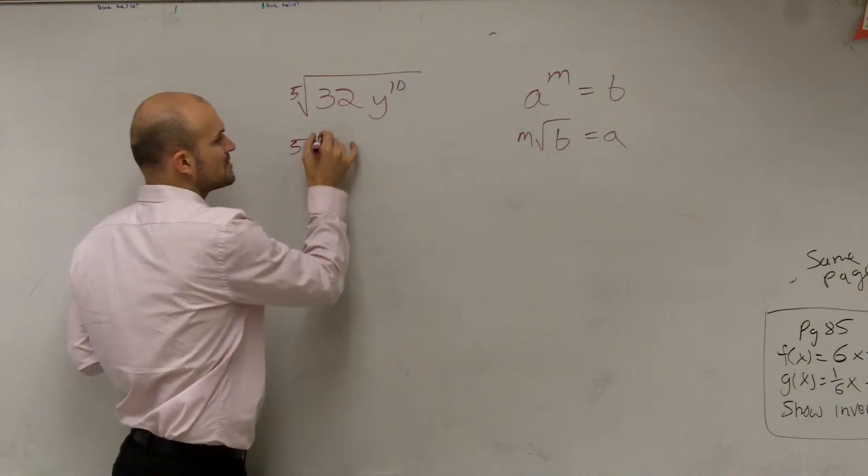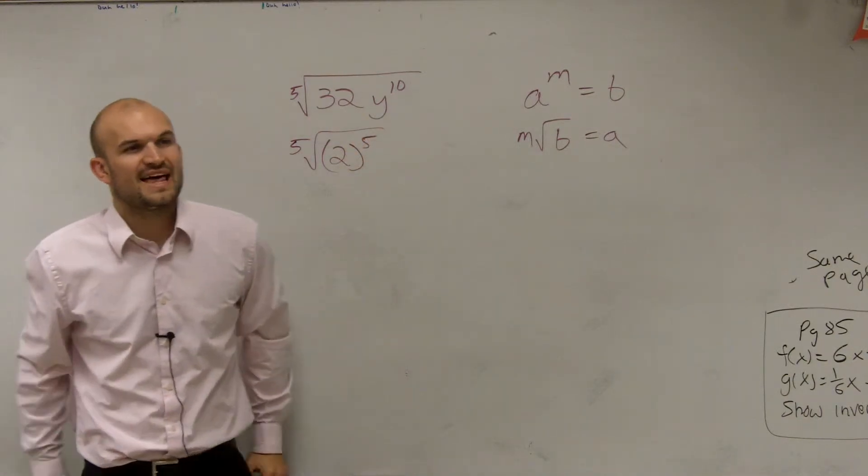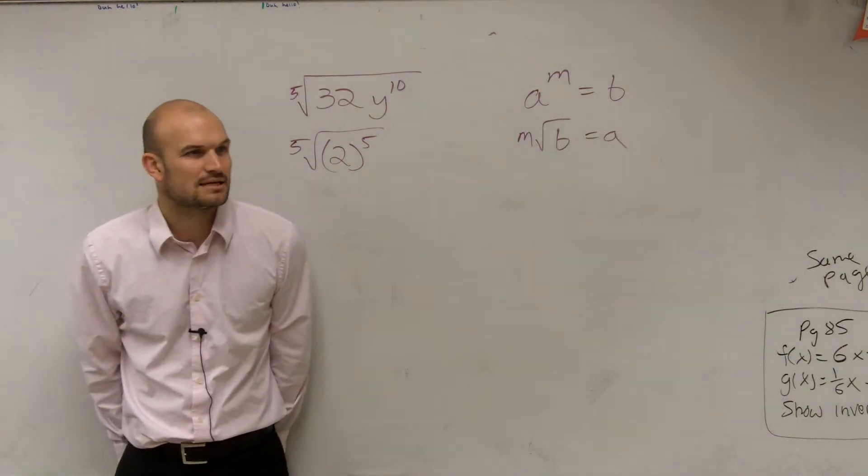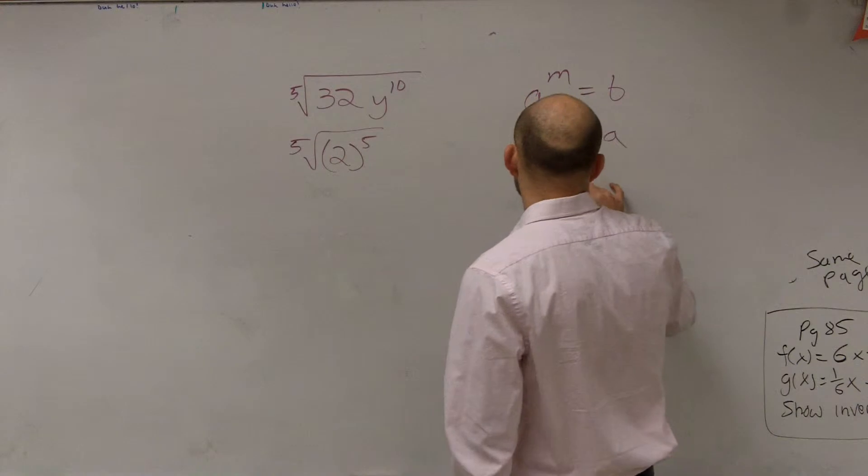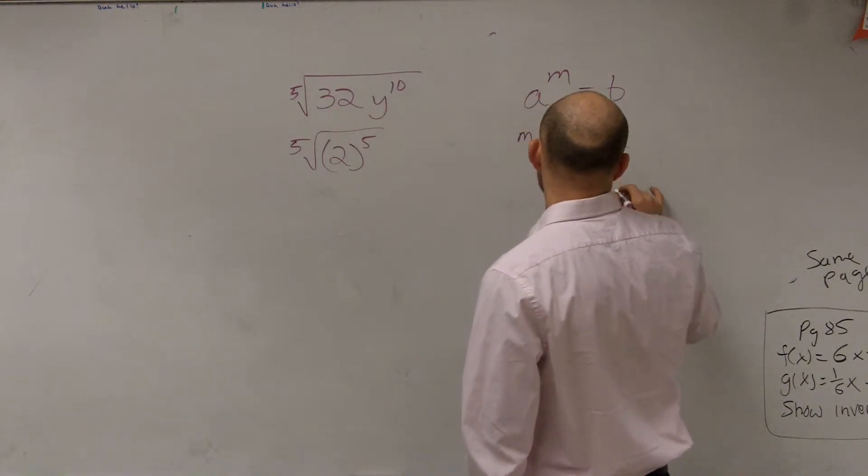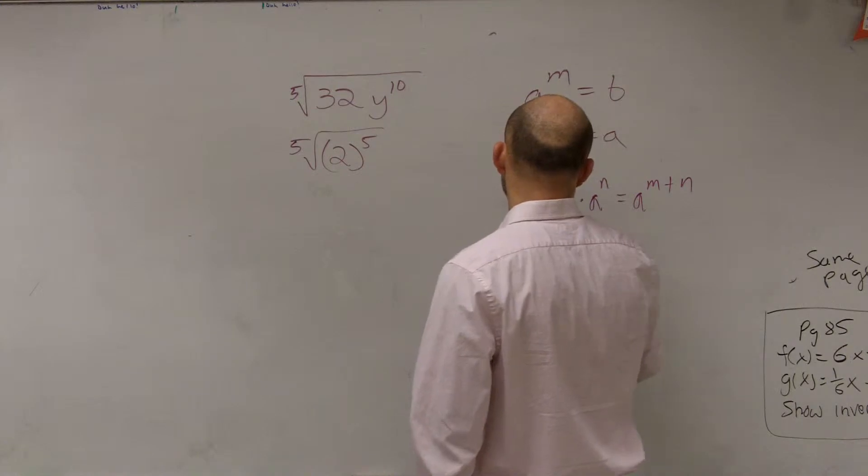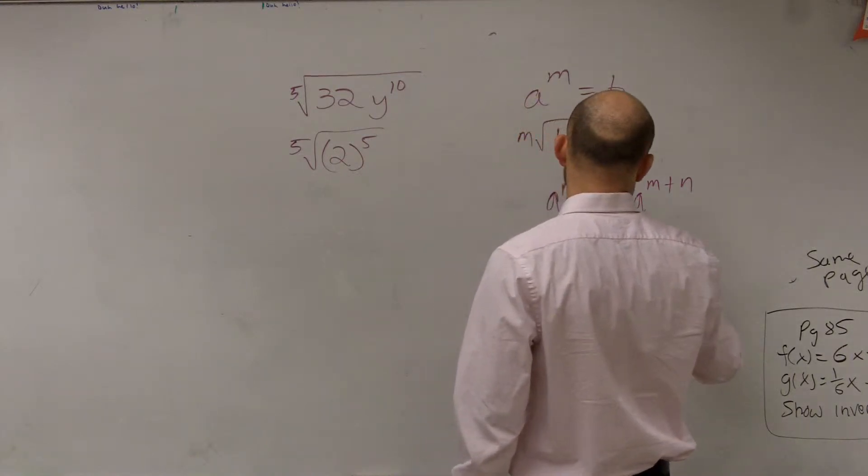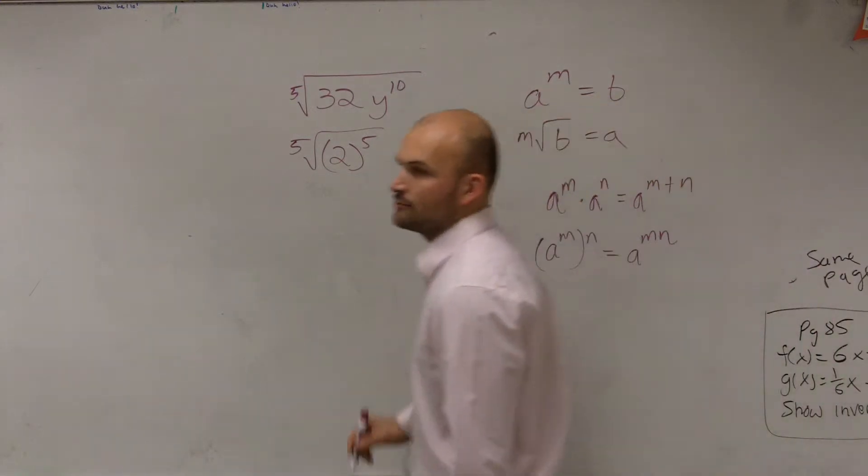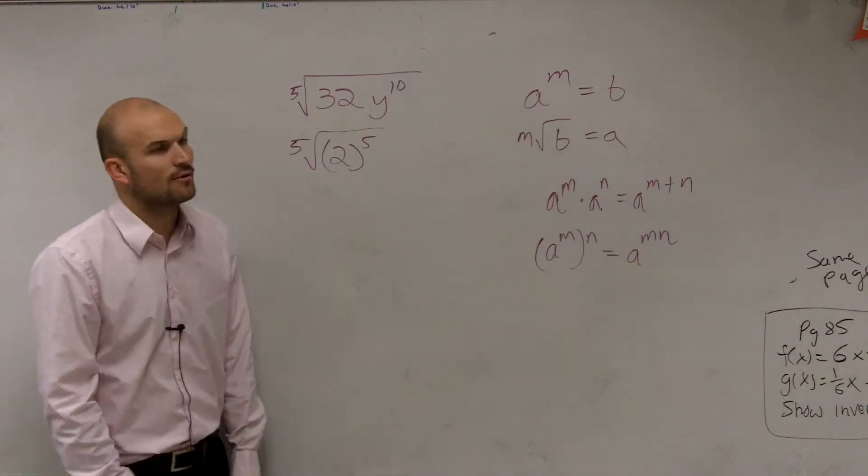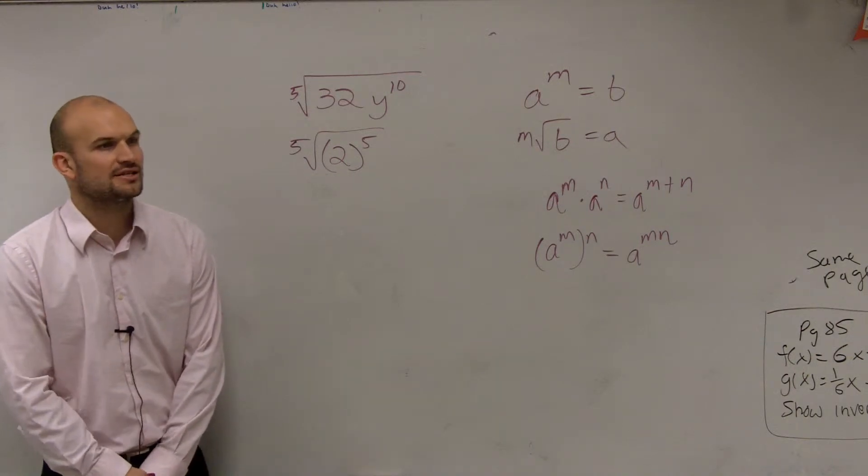So we could say the fifth root of 2 raised to the fifth power, and then about y to the 10th. Now before you answer that question, I'll give you two rules: a to the m times a to the n equals a to the m plus n, and a to the m raised to the n equals a to the m times n. So how could I rewrite y to the 10th power so that it's raised to the, technically I have something raised to the fifth power.